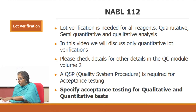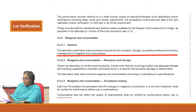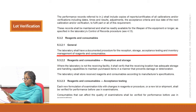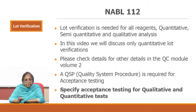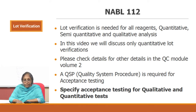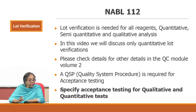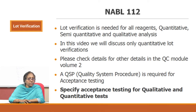If you look at 5.3 again, the laboratory shall have a documented procedure for the reception, storage, acceptance testing, and inventory management. So acceptance testing is part of the QSP that you would write under 5.3. The mechanisms should be defined for both quantitative and qualitative tests — and what those mechanisms are, the acceptance limits — all should be defined in your QSP.